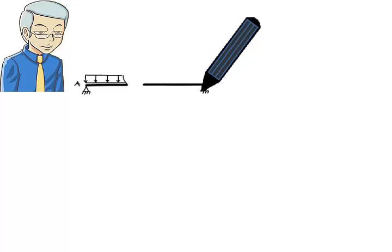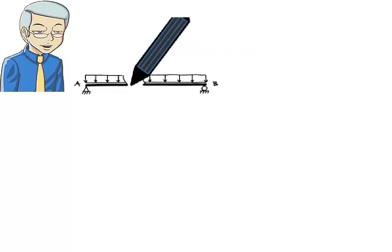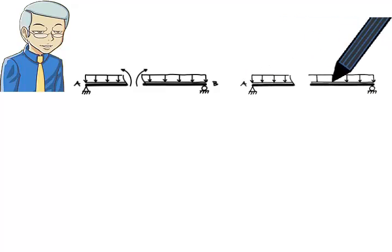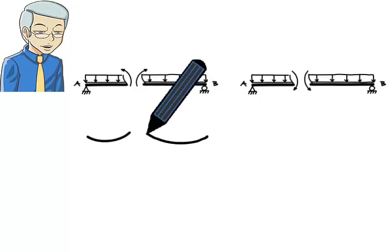Similarly, when we cut the beam, the internal bending moment is drawn either like this or like this. In the first scenario, the bending moment tends to cause a concave up deformation in the beam like this.